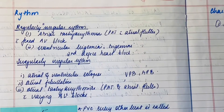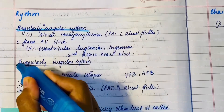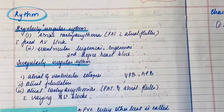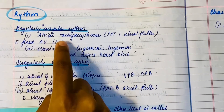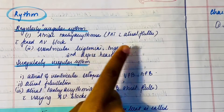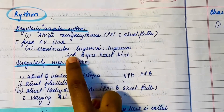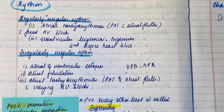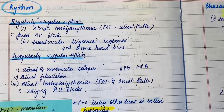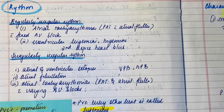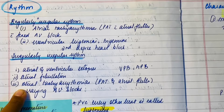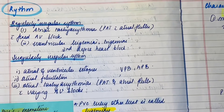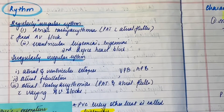There are mainly two types of abnormal rhythm: regularly irregular and irregularly irregular. Regularly irregular rhythm is normally found in atrial tachyarrhythmias with a fixed AV block, ventricular bigeminy, trigeminy, or second degree heart block. Irregularly irregular rhythm is found in atrial and ventricular ectopics, atrial fibrillation, and atrial tachyarrhythmias with varying AV blocks.